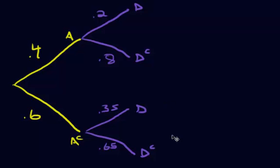Welcome everyone to our next video in the conditional probability series. This one is going to be about Bayes' theorem — specifically how to use Bayes' theorem on a tree diagram once you've filled in the numbers on all the branches. In the next video we'll probably do a word problem where you take all that information and put it onto the branches, but for right now let's assume we've done the word problem and gotten all the numbers on the branches.